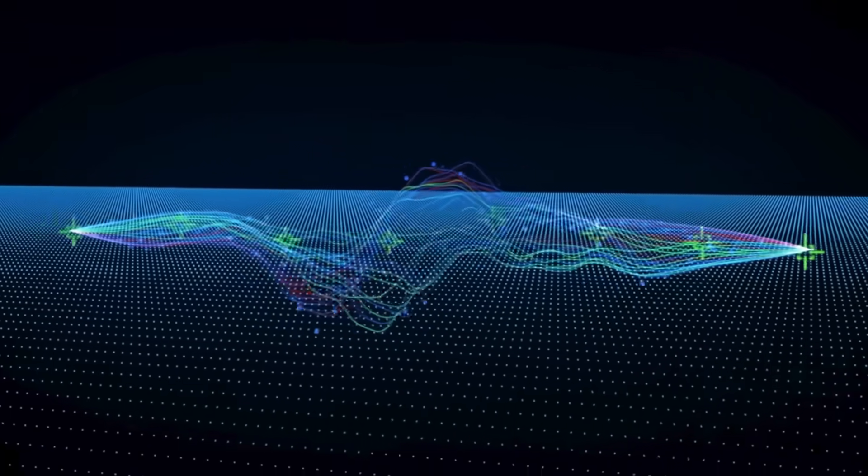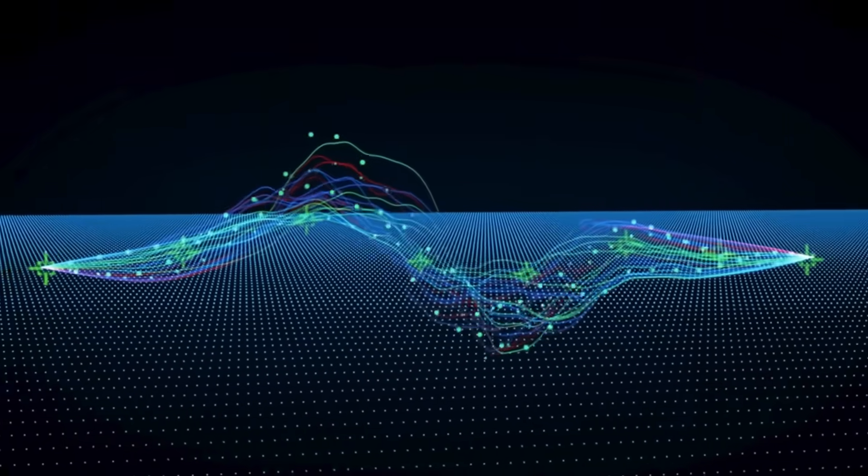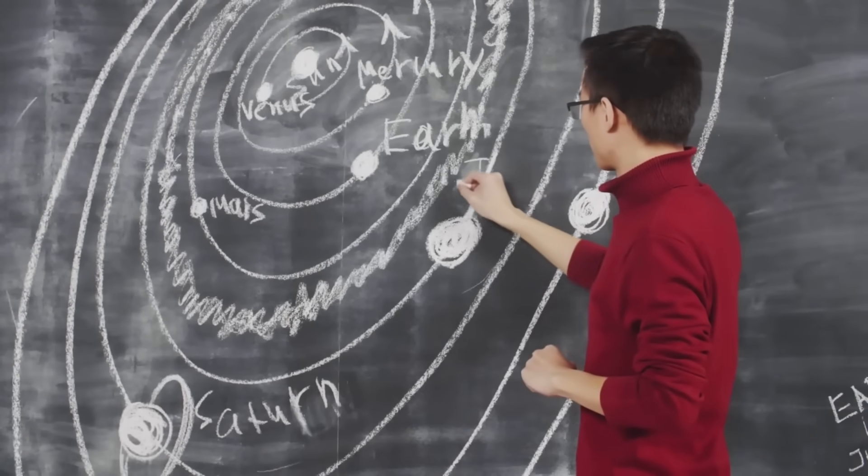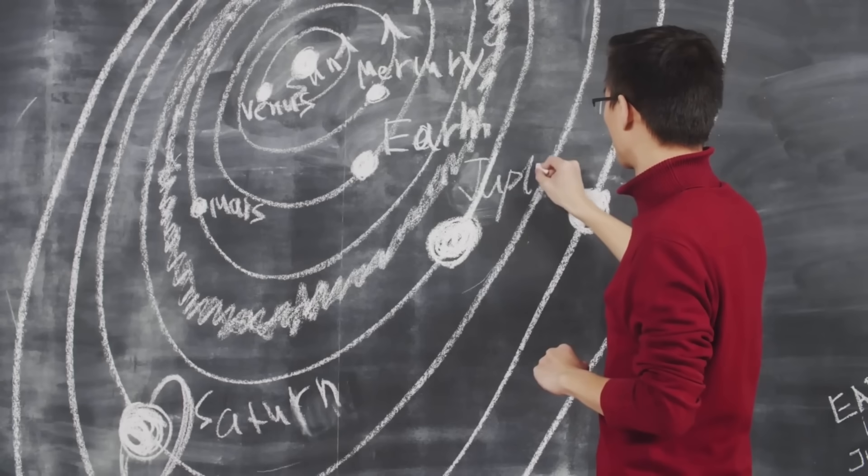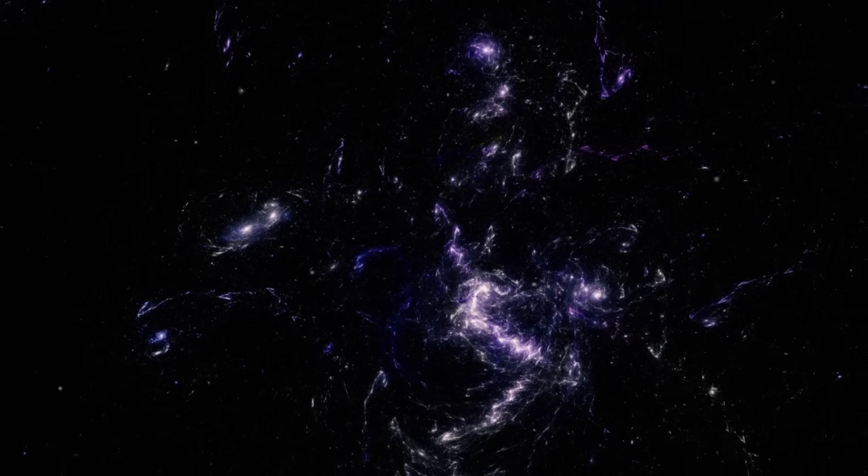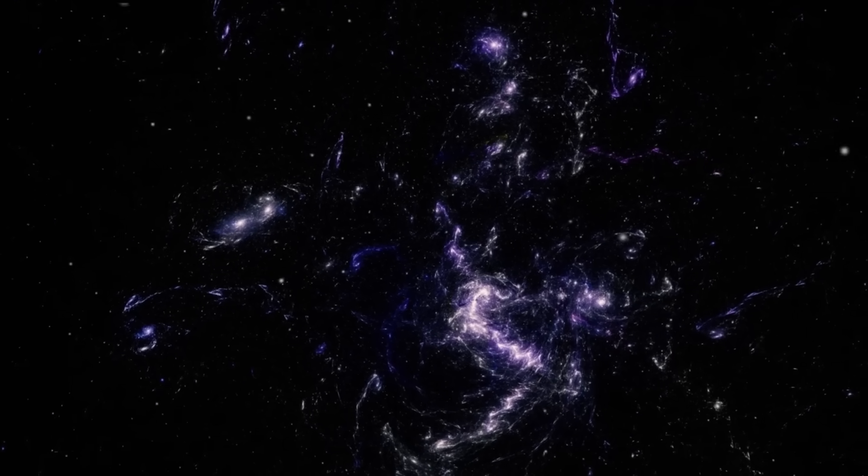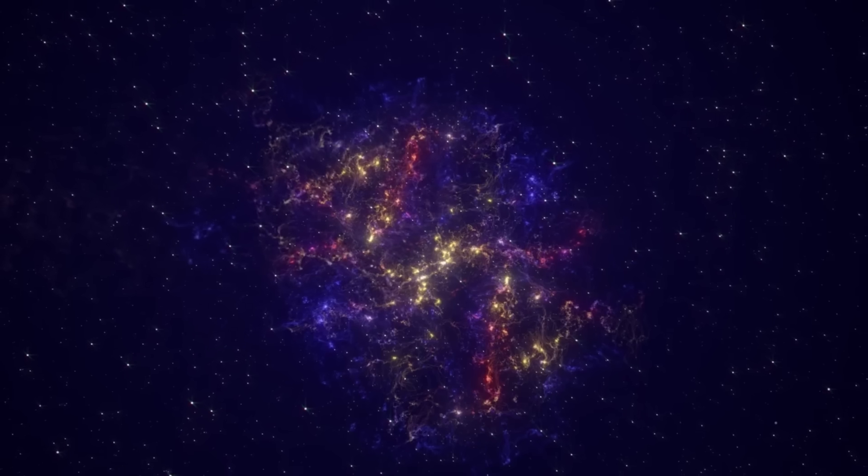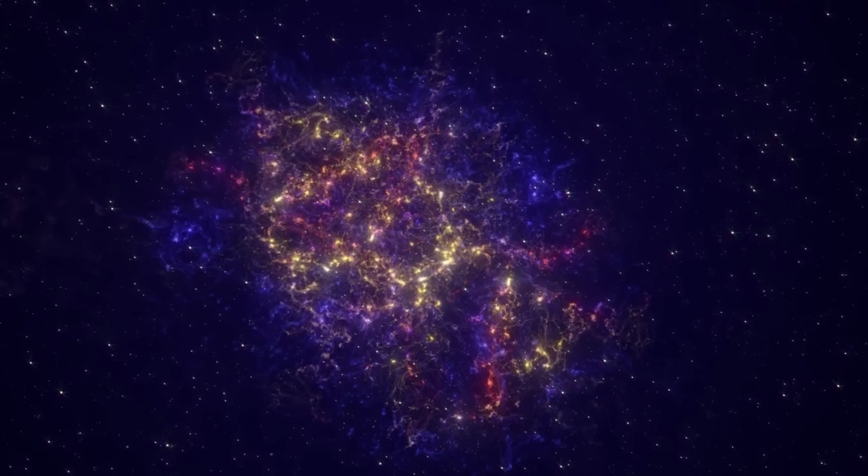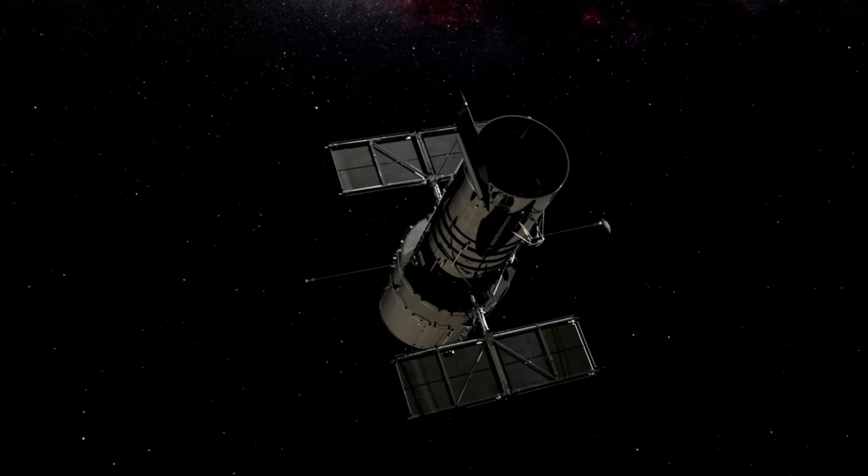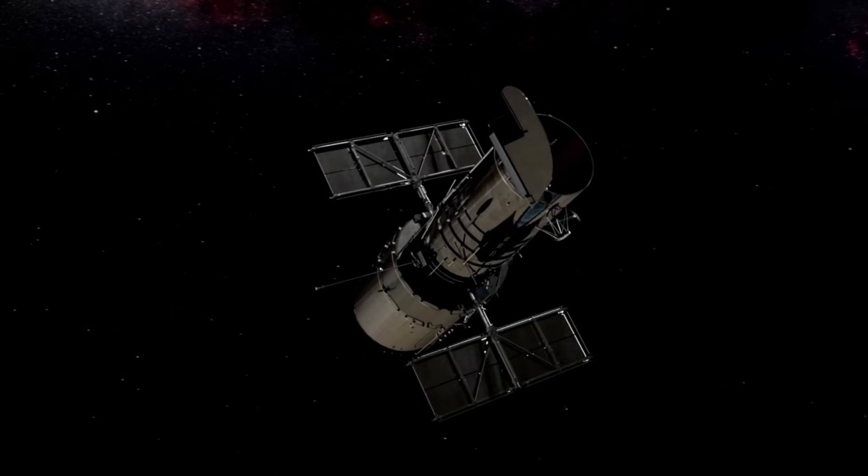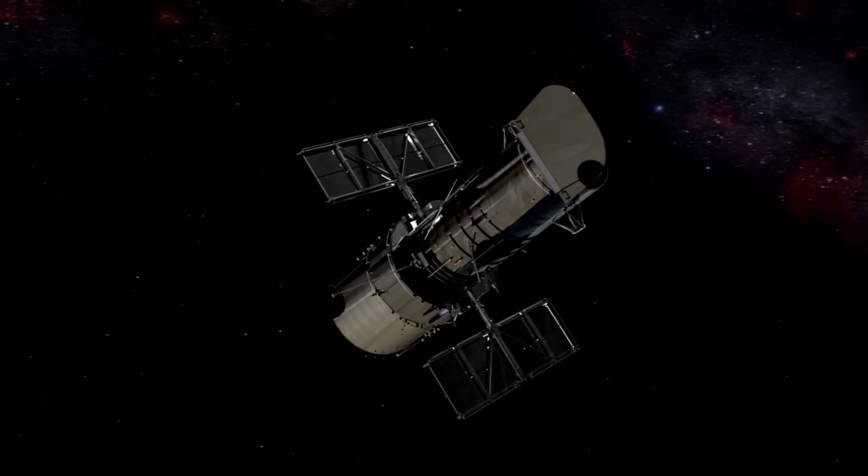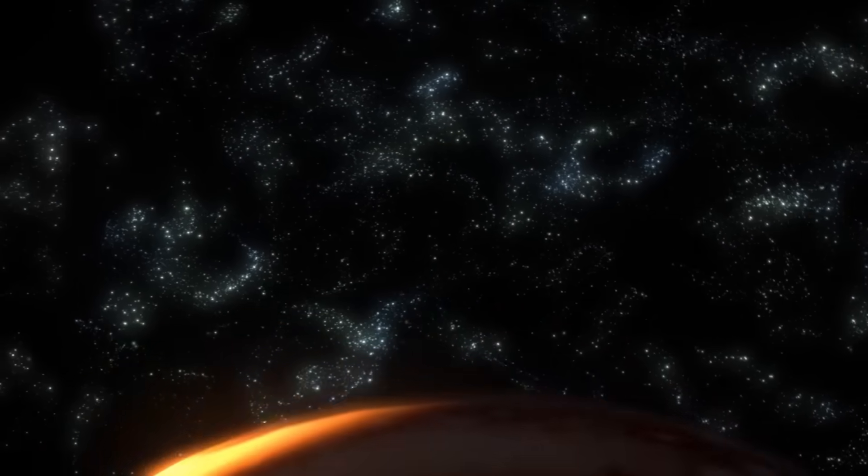Does the phenomenon known as dark flow actually exist? Dark flow is a hypothesis that originated in 2008 as a potential explanation for the observation that some clusters of galaxies appear to be moving faster than expected based on the known distribution of matter in the universe. The idea of dark flow suggests that these galaxy clusters might be influenced by a mysterious form of dark matter or dark energy pulling them in a specific direction across the universe. However, the existence of dark flow remains highly controversial and has yet to gain full acceptance within the broader scientific community.